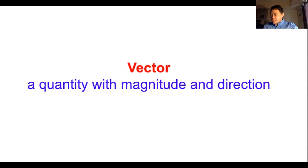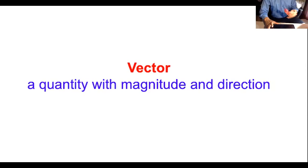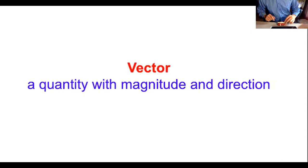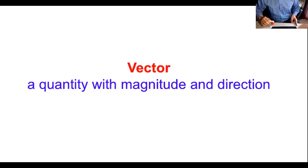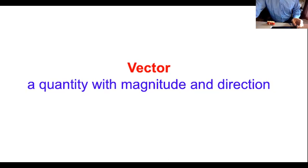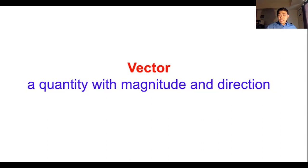Displacement is another vector example. Let's say a truck moves from this location to that location — that's distance. But when the object is displaced from this position to the right, that's displacement. Displacement is a vector quantity — it has direction, so we know it's going somewhere to the right.